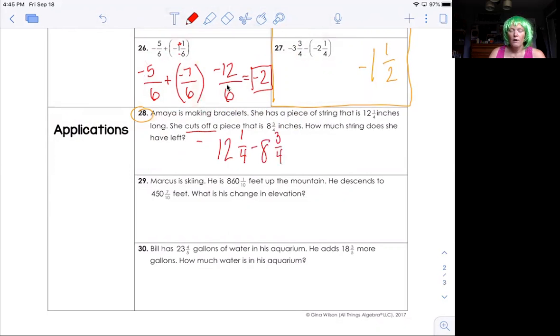Two big mixed numbers that I got to turn into improper fractions. So four times 12 is 48 plus one is 49. So I get 49 over four minus four times 8 is 32 plus three is 35 over four. 49 minus 35 is 14 over four. And that can reduce to seven over two.